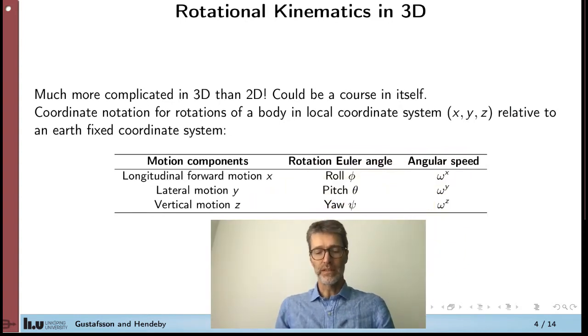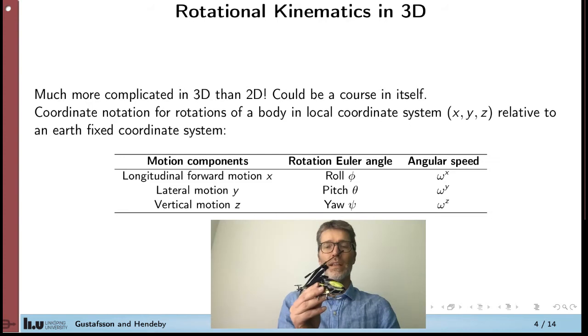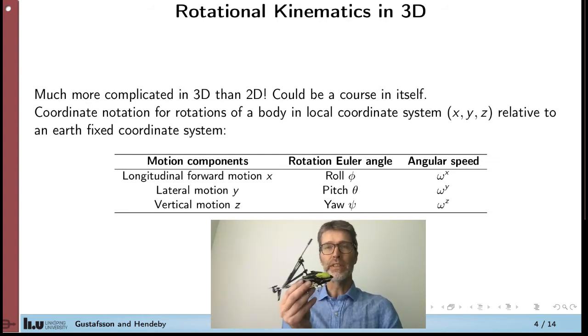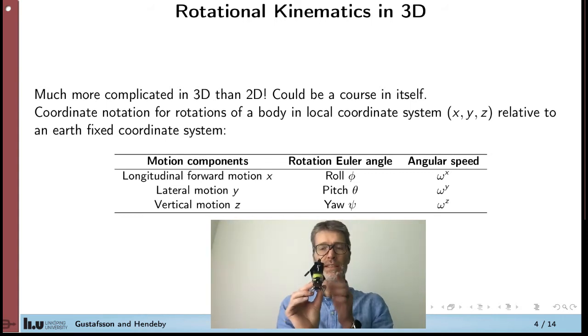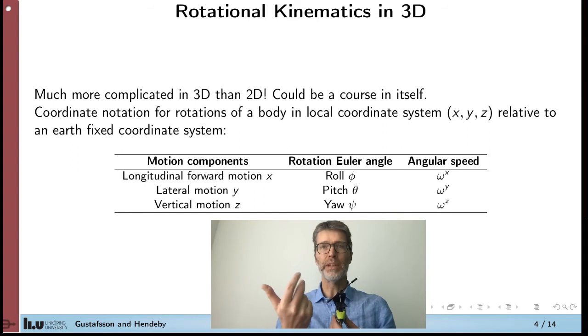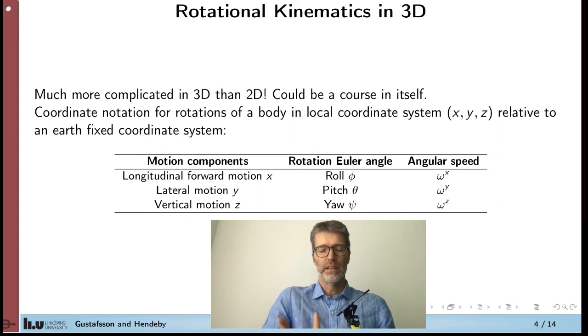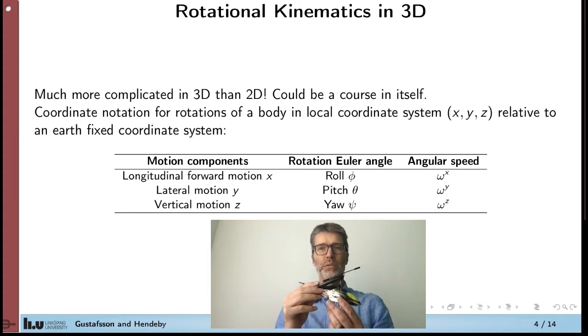So first some definitions. Think about this platform here. We need to define angles for the orientation. We start with Euler angles. So we have the x-axis in the front direction, y to the right, and we use the right-hand rule. So orientation around x-axis is called roll, and the angular speed is called omega x. Then we have the pitch angle and the yaw angle.